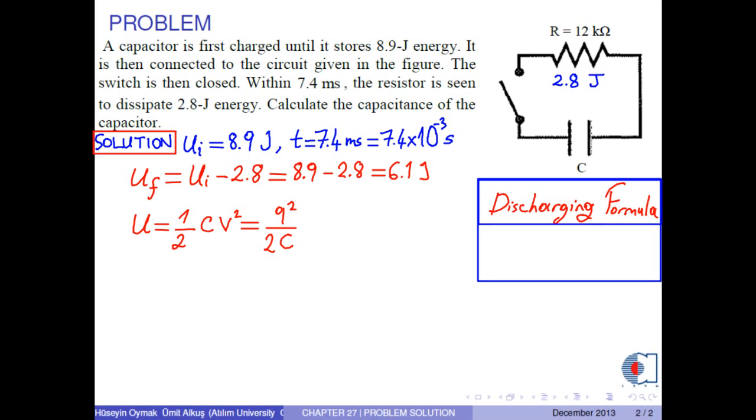Remember that the discharging formula is Q final equals Q initial times E to negative T over tau, where tau is the time constant, which is calculated by the formula R times C.